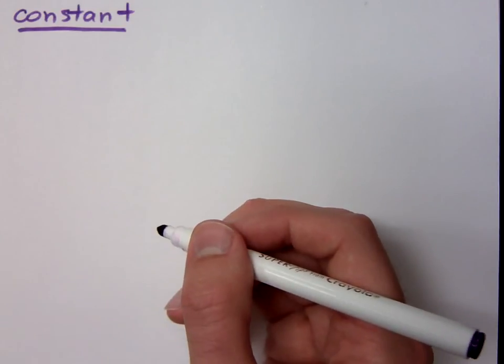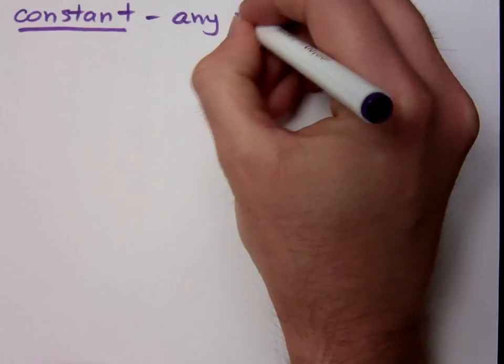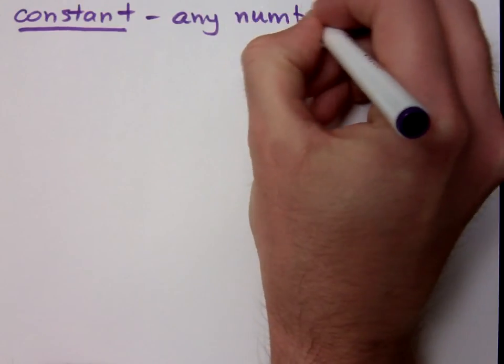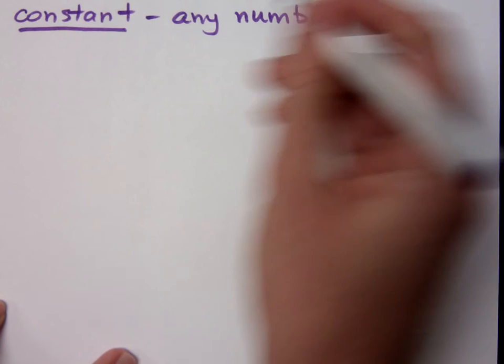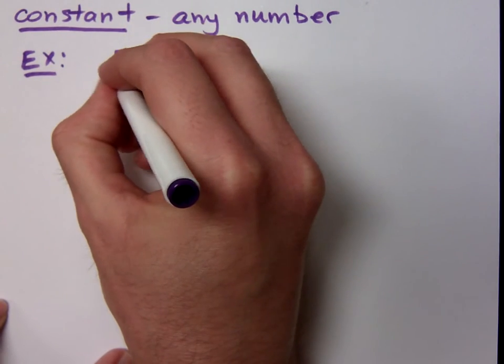So if I talk about a constant, a constant is just any number. That's all it is. Any number that you think of is going to be a constant. And the way that we express these, the symbols that we use, are symbols we've used forever.